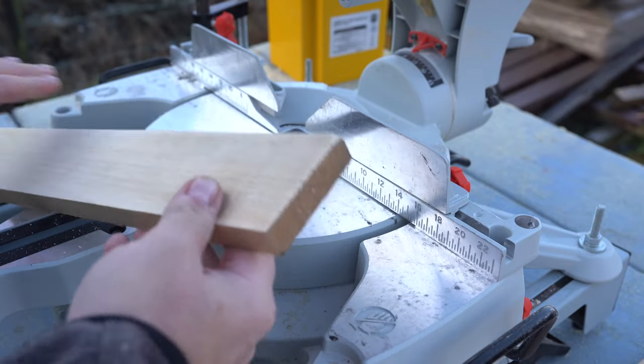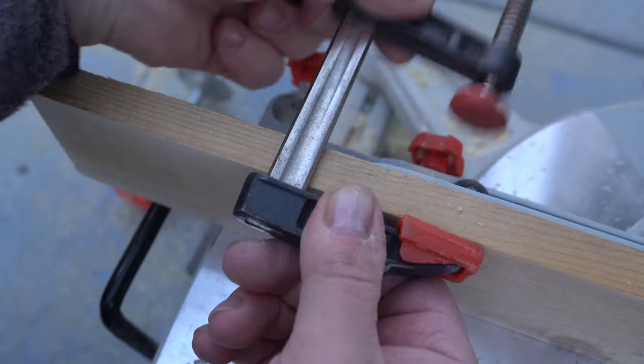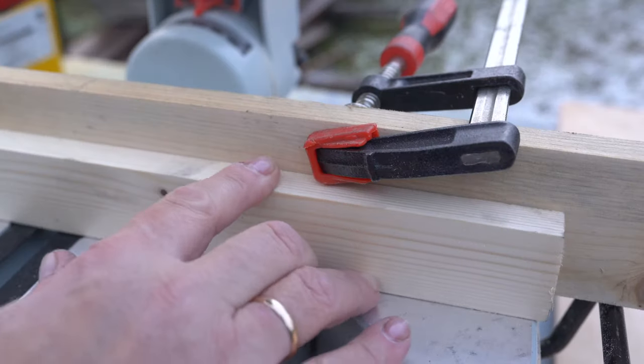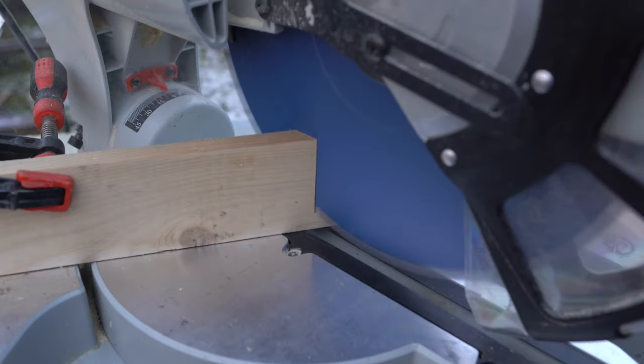For the cutting jig I am using a straight piece of 1x3 and clamping it to the saw fence. I set my desired degree and get it cut.